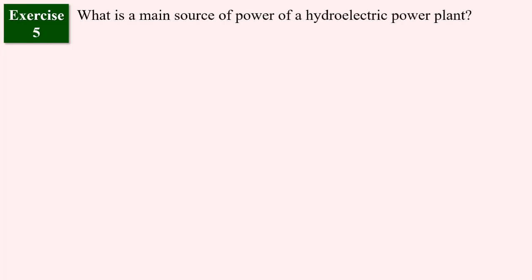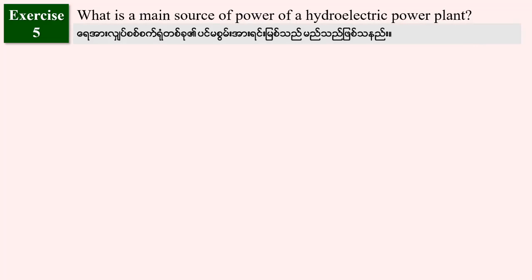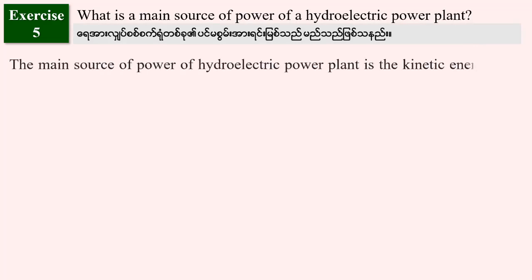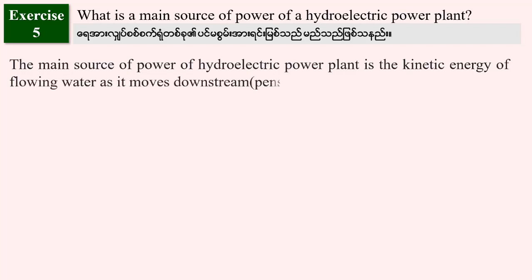Question number 5: What is the main source of power in a hydroelectric power plant? The main source of power of a hydroelectric power plant is the kinetic energy of flowing water as it moves downstream.